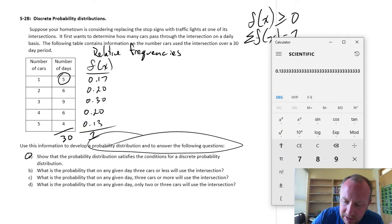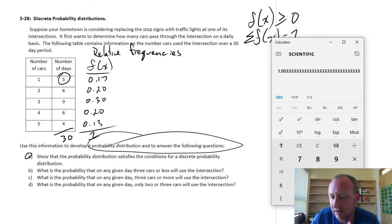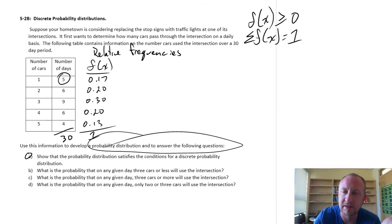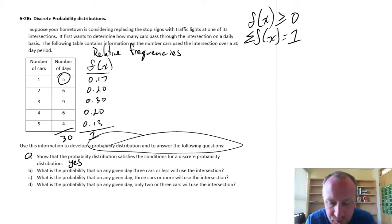We can go through and calculate this, starting at the bottom, plus 0.2, plus 0.3, plus 0.2, plus 0.17. And okay, there's some rounding error in there, but yes, we can see that it all adds up to 1. So let's say, yes, we do meet those criteria.